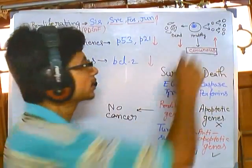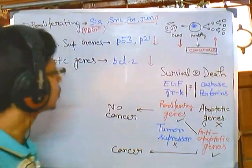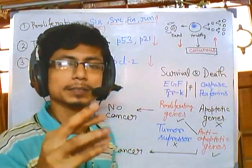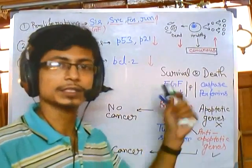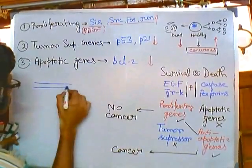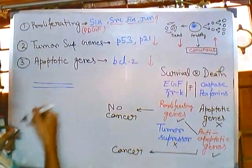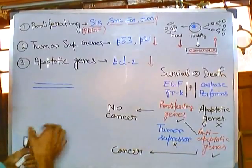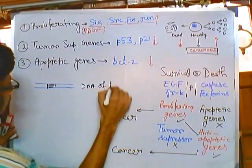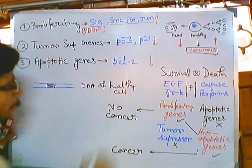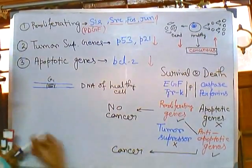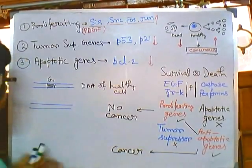Proto-oncogenes are present inside healthy cells but can be converted into another type of gene that produces products harmful to the cell, converting it into a cancerous cell. In normal DNA of a healthy cell, a gene like G1 is a proto-oncogene. Due to modifications by various agents, this gene is transformed into G1-prime — a modified version.